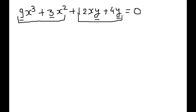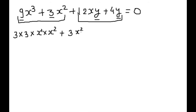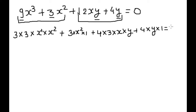We can write 9 as 3 into 3, and x cubed as x into x squared, because in multiplication exponents get added — so 1 plus 2 is 3. Plus 3x squared into 1. Then 12 we can write as 4 into 3, into x into y, plus 4 into y into 1, equal to 0.